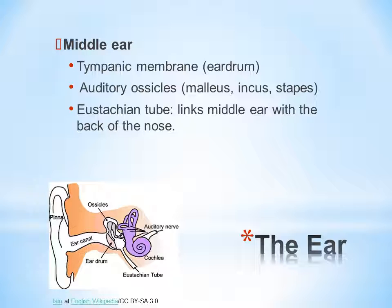The primary function of the middle ear is bony conduction of sound and transferring it to the inner ear. The tympanic membrane, or eardrum, and auditory ossicles make up the middle ear. The Eustachian tube links the middle ear with the back of the nose.